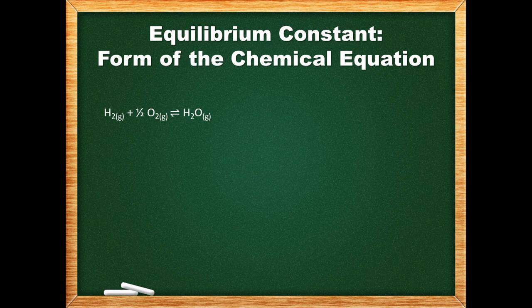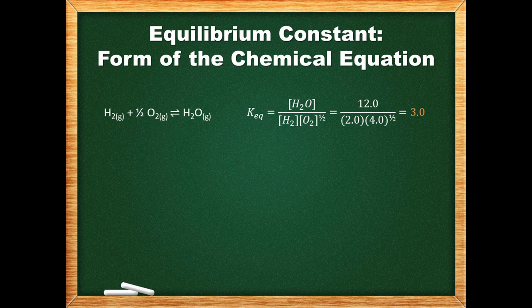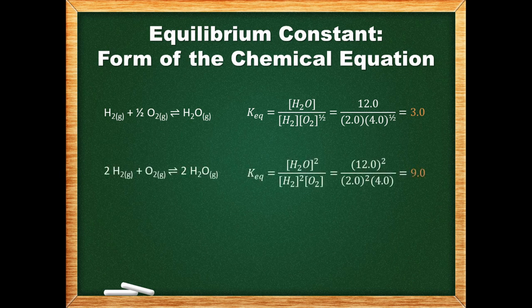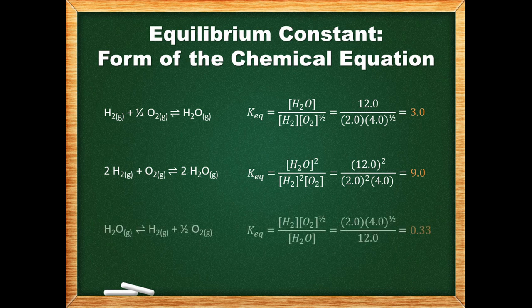The form in which a chemical equation is written affects its equilibrium expression and constant. Take, for example, the reaction of hydrogen and oxygen gas forming water vapor. If the concentrations of hydrogen, oxygen, and water vapor are 2 M, 4 M, and 12 M respectively, we get an equilibrium constant of 3. If we double the equation, it has a different equilibrium expression and a different constant — doubling the equation has the effect of squaring the equilibrium constant. If we take the original equation and reverse it, it inverts the equilibrium expression and constant. The equilibrium constant for any reaction is the reciprocal of the equilibrium constant for its reverse reaction.